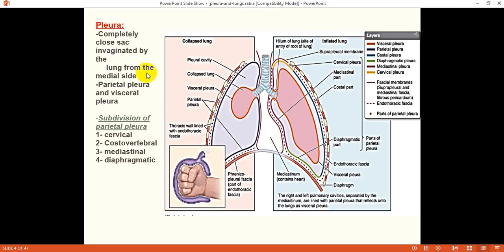This serous fluid is present in the space which is called pleural cavity. We can imagine this space as a balloon which is indented by the lungs from the medial side. When the lungs indent the pleural sac, there is a layer of pleura which is in direct contact with the lungs.